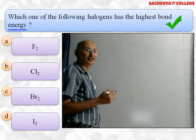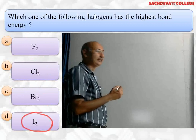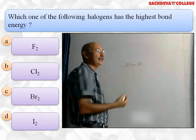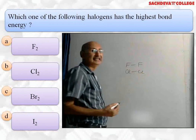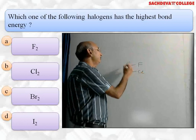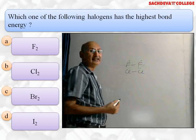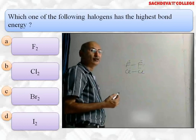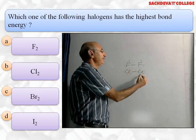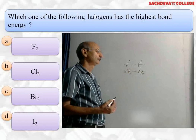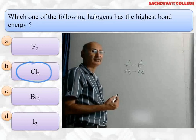Next question: which of the following has the highest bond energy — F₂, Cl₂, Br₂, or I₂? Although it appears that F₂ should have the highest bond dissociation energy, the actual answer is Cl₂. The reason is that fluorine has an exceptionally small size, causing repulsion between the valence electrons of the fluorine atoms, which weakens the bond. In Cl₂, repulsion between lone pairs is comparatively less due to its larger atomic size. So the correct answer is (b) Cl₂.